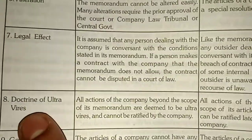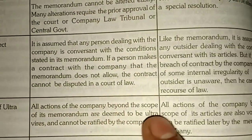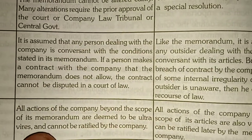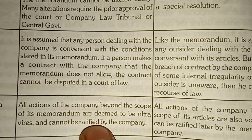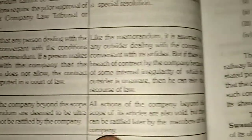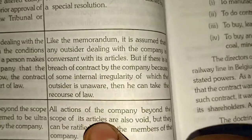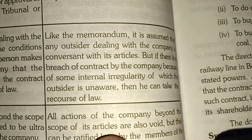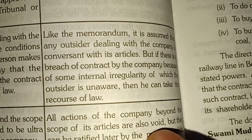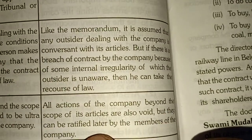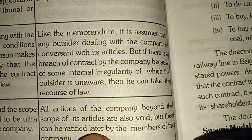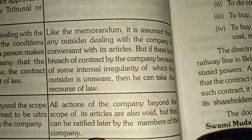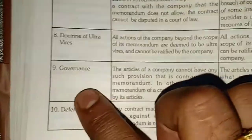Point eight: doctrine of ultra vires. All actions of the company beyond the scope of its memorandum are deemed to be ultra vires and cannot be ratified by the company. However, in the case of articles of association, all actions of the company beyond the scope of its articles are also void, but they can be ratified later by the members of the company.